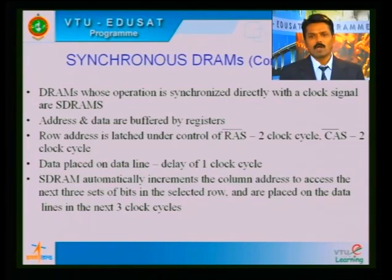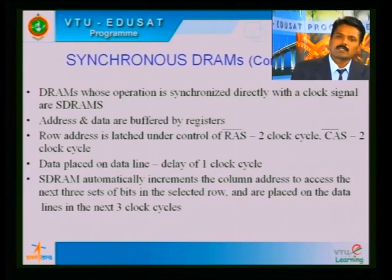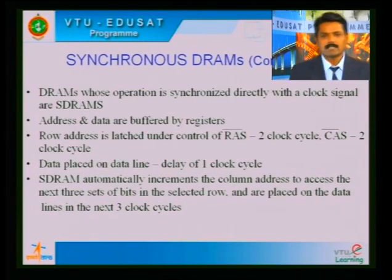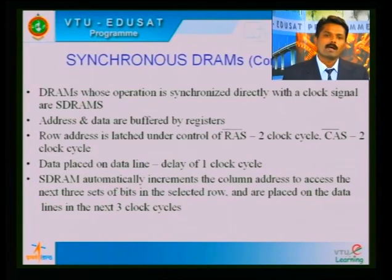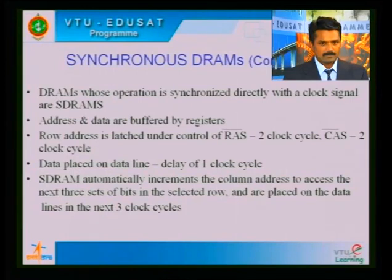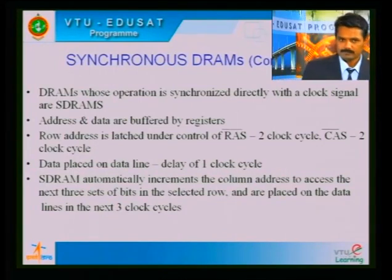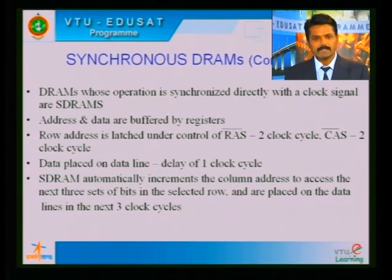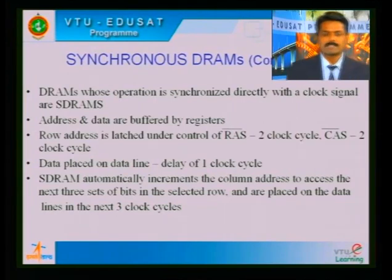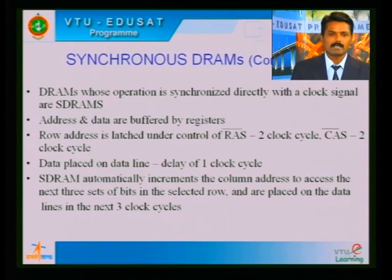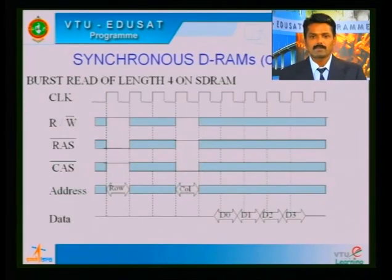SDRAMs are synchronized with the clock signal — hence synchronous. Address and data are buffered by registers. The row address is latched under control of RAS with a 2-clock-cycle delay, CAS with a 2-clock-cycle delay, and data placed on the data line after a 1-clock-cycle delay. The SDRAM automatically increments the column address to access the next 3 sets of bits in the selected row, placing them on the data lines in the next 3 clock cycles.